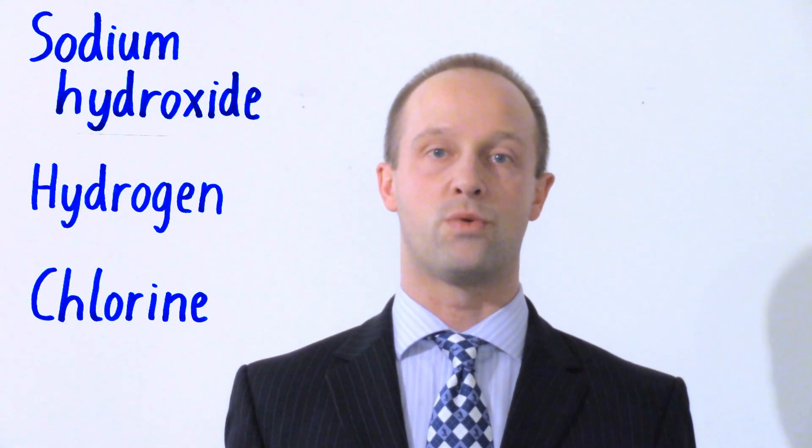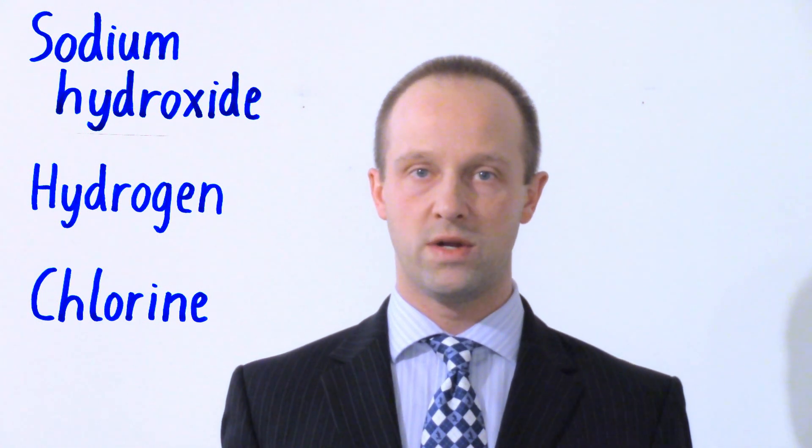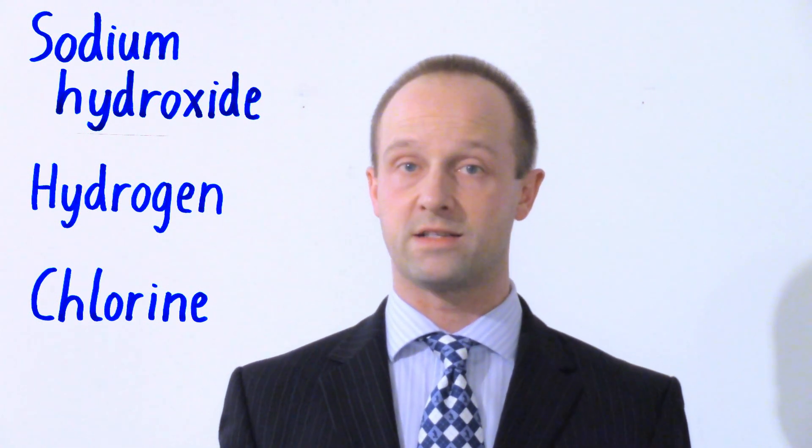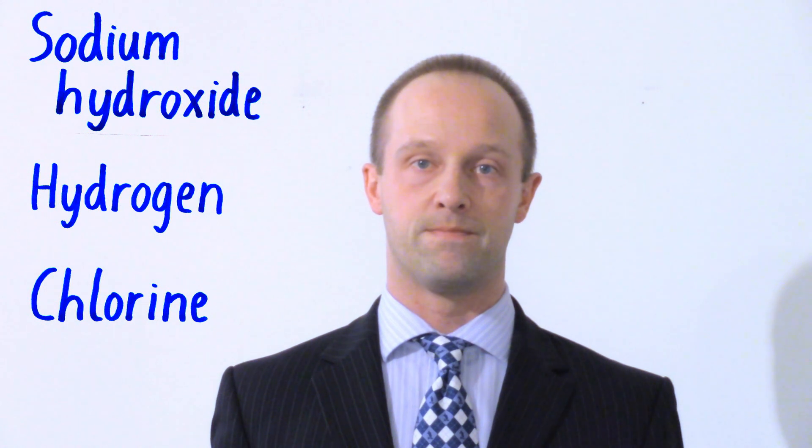Now this is actually quite useful. All three of these substances are really useful reagents or reactants within the chemical industry. We can use chlorine to form some plastics, and it can also be used to make bleach. We can use sodium hydroxide to make things like soap. And the hydrogen can be used for a range of uses. It can be used as a fuel, it can be used to hydrogenate vegetable oils, but it's got a lot of uses. But you do need to be aware of this particular example.